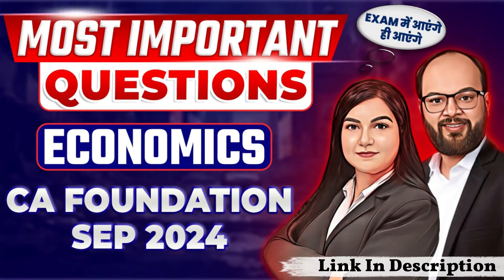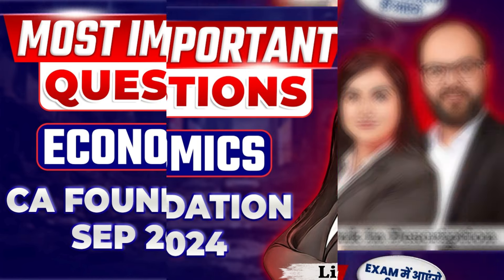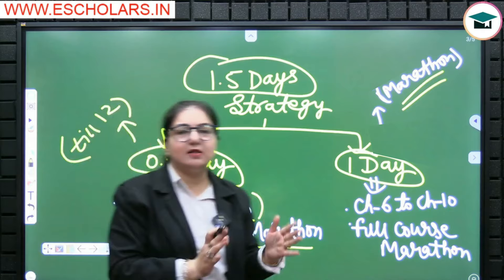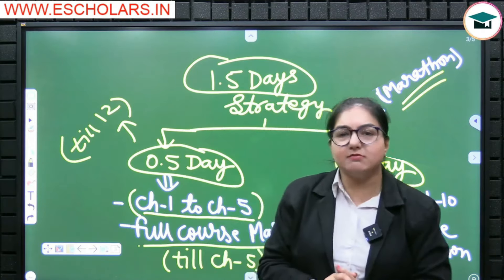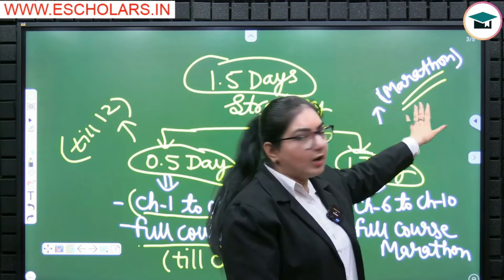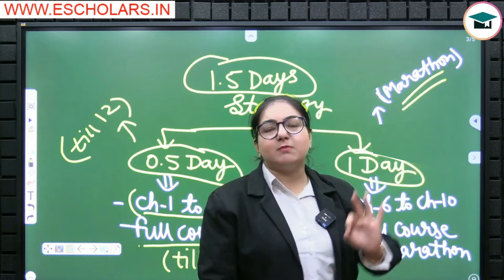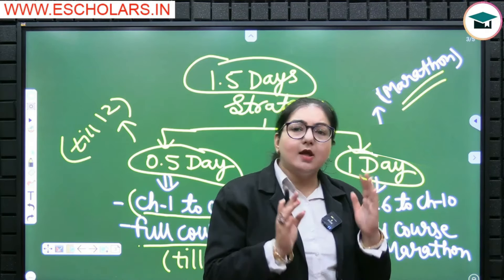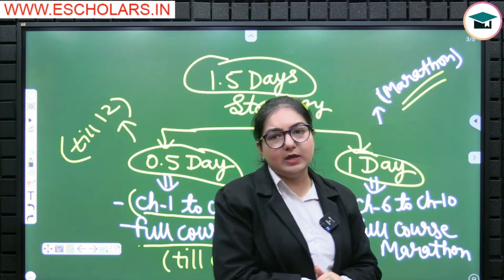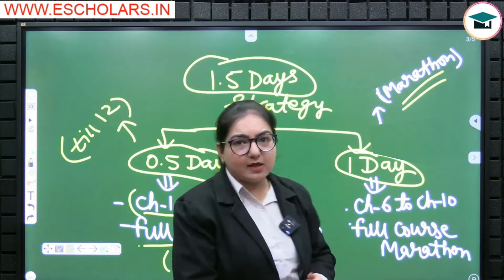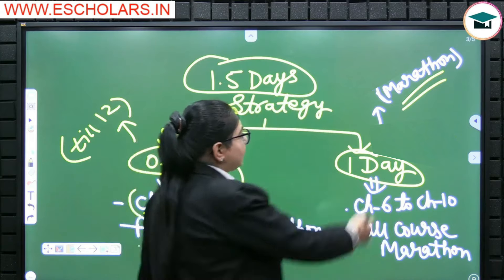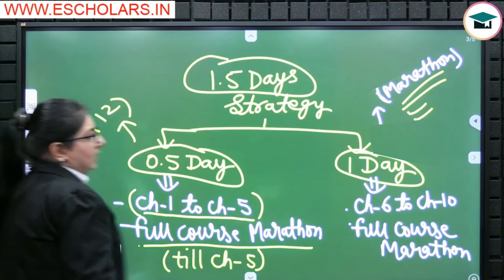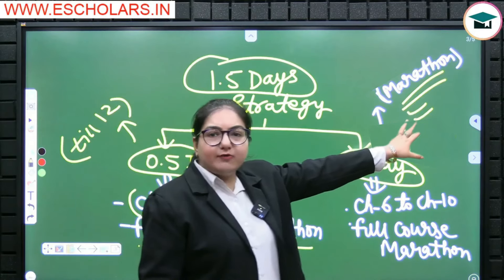Now, what do you do tomorrow morning? Tomorrow morning we will have a marathon to attend at the Grooming Education Academy. A marathon session will be conducted in which chapter 1 through chapter 10 will be covered with revision. So students, make sure that you attend this session. Chapter 1 to chapter 5 revision will be done, and we will also be able to revise chapter 6 to chapter 10. This marathon will be around 4 to 5 hours.